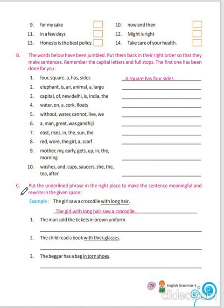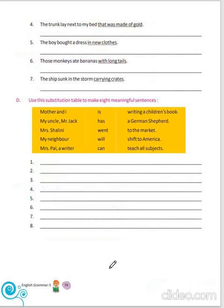Now, come to here. You have to put the underlined phrase in the right place to make the sentence meaningful. So, it will be: the man in brown uniform sold the tickets. The child with thick glasses read a book. The beggar in torn shoes has a bag. The trunk that was made of gold lay next to my bed. The boy in new clothes got a dress. Those monkeys with long tails ate bananas. The ship carrying crates sunk in the storm.